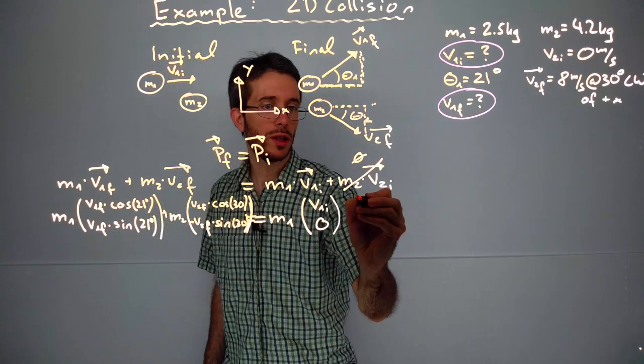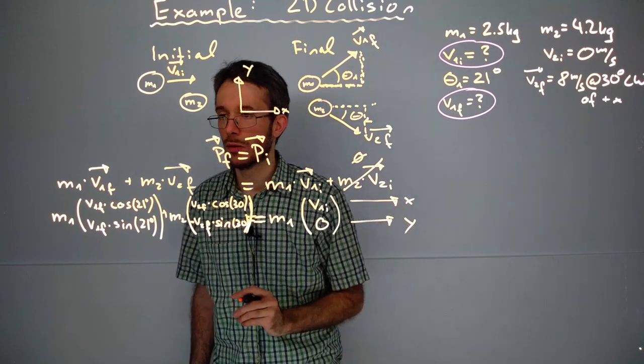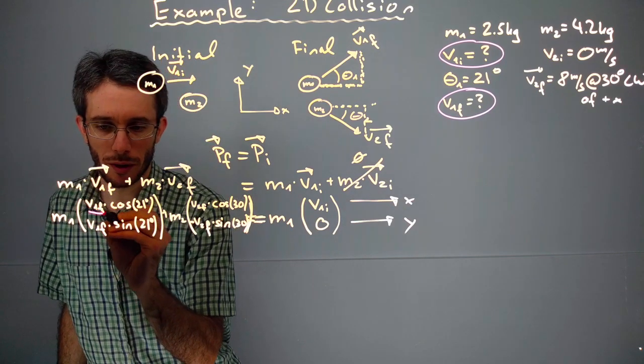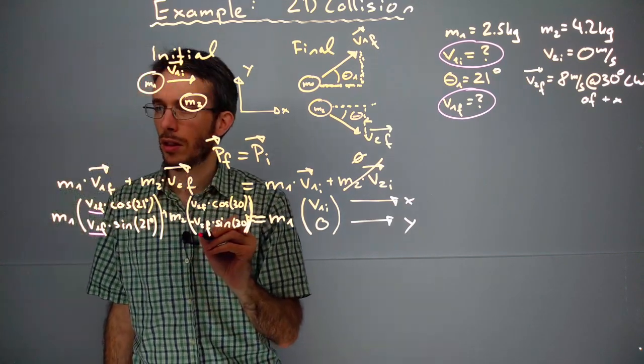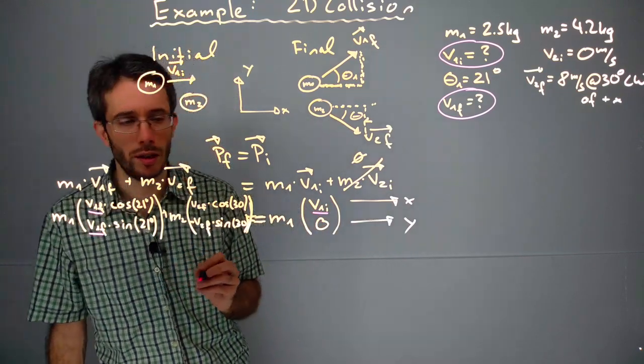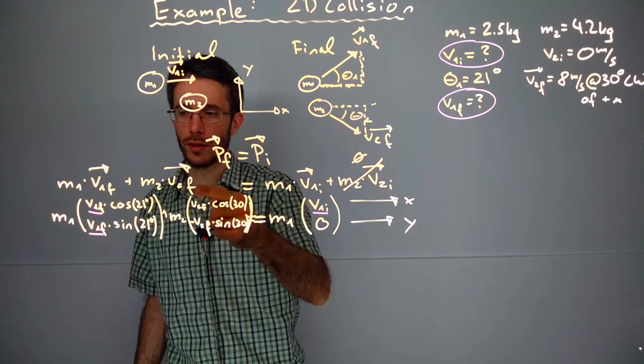So here are my two equations: here is the x equation and here is the y equation. Now let's look at my unknowns. My unknowns are v1 final and v1 initial. Everything else is known, we know v2 final.